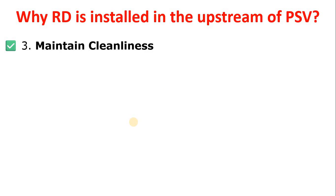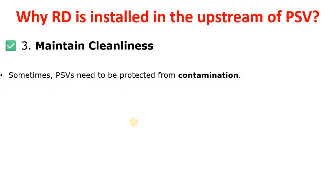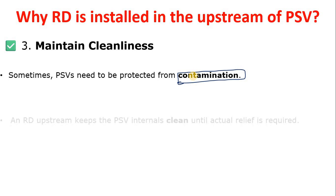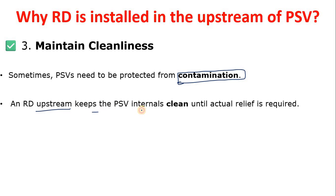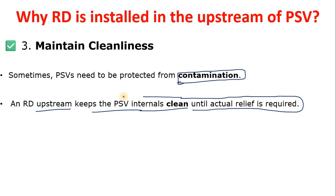Another reason is to maintain cleanliness. Sometimes the PSV needs to be protected from contamination — for example, in food-grade processes where you do not want contamination. An RD keeps the PSV internals clean until actual relief is required. Please let me know in the comments if you are working with RDs and PSVs in industry and share your views on this topic.